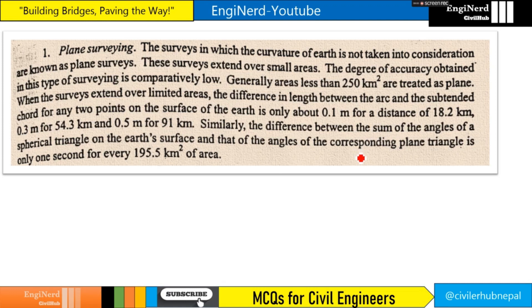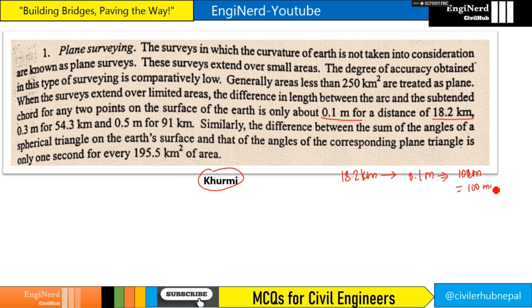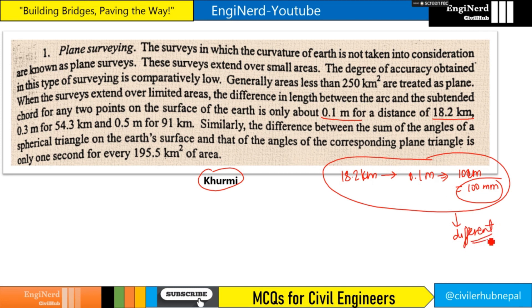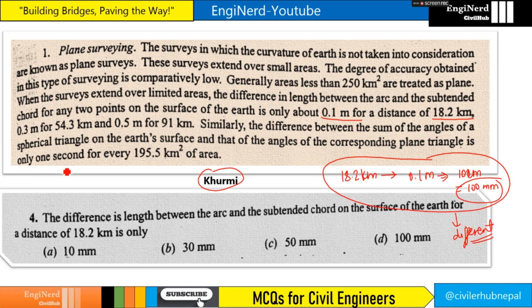This particular thing is from Kurmi. Kurmi says 0.1 meter for a distance of 18.2 kilometers. So he says for 18.2 km it's 0.1 meter, which is 10 centimeters or 100 mm. This is quite different from the previous references. Interestingly, this same question appears multiple times in Kurmi's book.